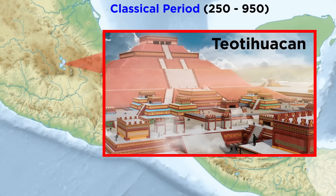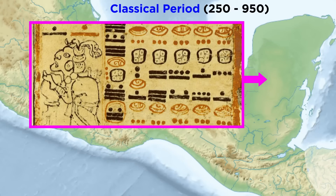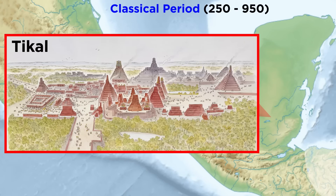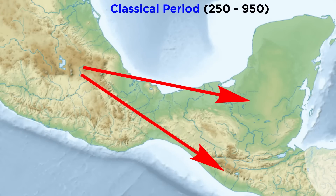The city of Teotihuacan in central Mexico grew to become the largest city in Mesoamerica. The Maya region flourished in developments of math, science, and literature. Several famous Mayan cities, like Copen and Tikal, date to this period. Teotihuacan launched several campaigns into the Maya and other regions during this period, spreading its cultural influence and trade relations across all of Mesoamerica.